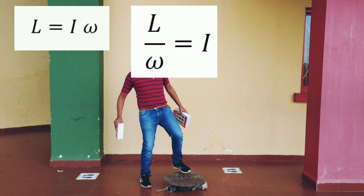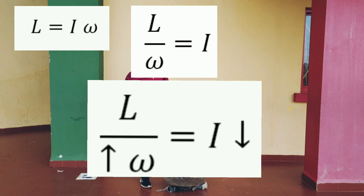And that is why when the masses are closer to the axis of rotation, the moment of inertia decreases, thereby increasing the angular velocity.